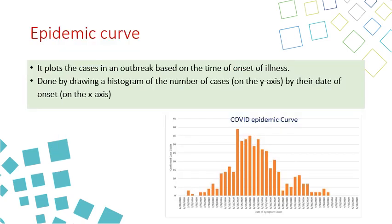So how do we make the epidemic curve? We make a graph of number of cases versus the time of onset of the disease. You have a y-axis and x-axis. For the y-axis, you add the number of cases shown as bars, and on the x-axis, you put the time. The time can be days, weeks, months, and so on. This is the epidemic curve.